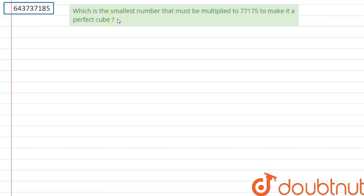Hello everyone, the question is: which is the smallest number that must be multiplied to 77175 to make it a perfect cube?